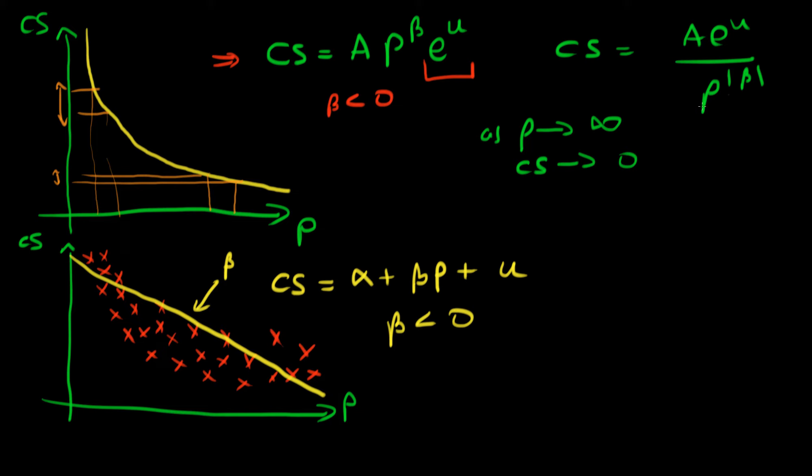So by estimating this linear model we have functionally misspecified the true population process which is this power law distribution, and because of that β is actually quite misleading. The parameter which we've estimated is giving us quite a misleading insight into what's actually going on in the population.